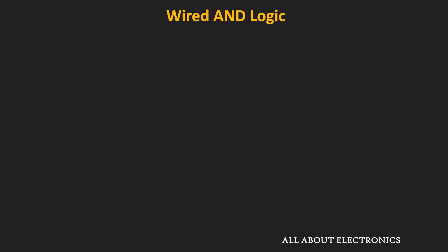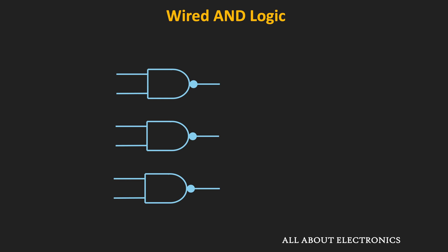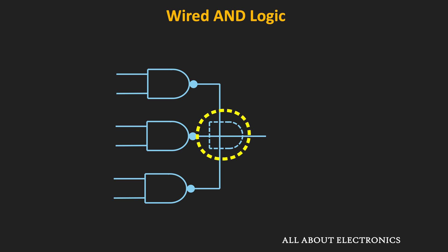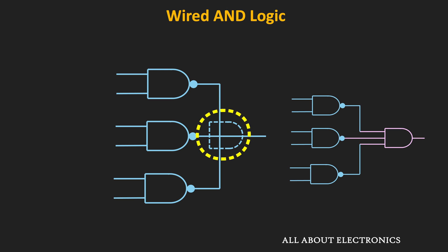In wired logic, when the outputs of different gates are tied together, that output will function as a logic AND gate. That means if we see the wired output of the overall circuit, it will behave as if we have connected the outputs of these logic gates to an actual AND gate. Since the wired output performs the logic AND operation, it is known as wired AND logic.